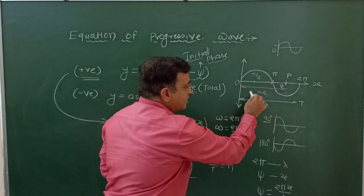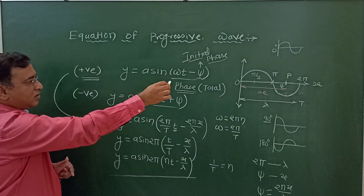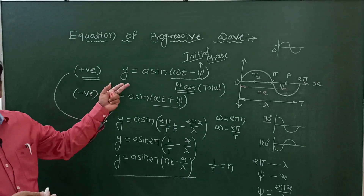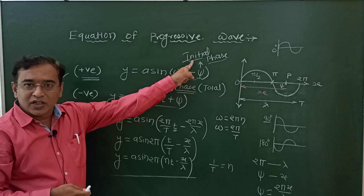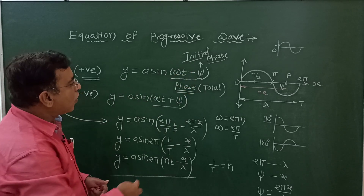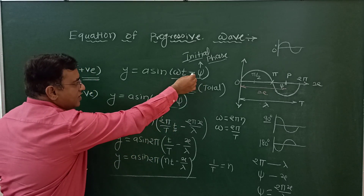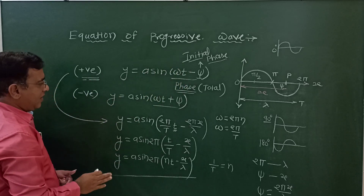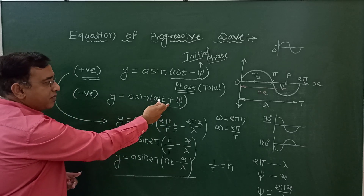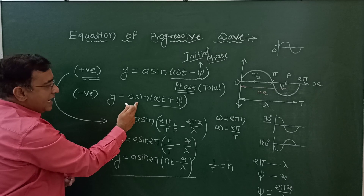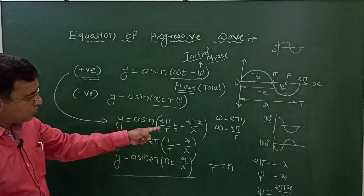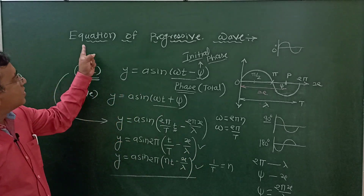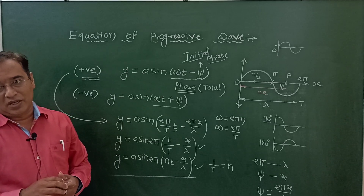The equation can also be written as y equals a sine of 2 pi times (nt minus x upon lambda), since 1 by T equals n. This is your final equation of a progressive wave traveling along the x axis. In summary: the total phase for one complete wave is 2 pi, which can be divided into segments — pi, pi by 2, 3 pi by 2 — and the total length is lambda. When traveling along the positive x axis, y equals a sine of omega t minus phi; along the negative x axis, y equals a sine of omega t plus phi. Substituting omega as 2 pi n or 2 pi by T gives the two final forms of the progressive wave equation.